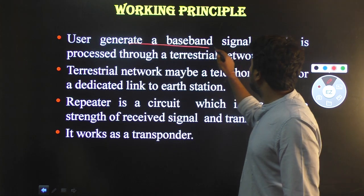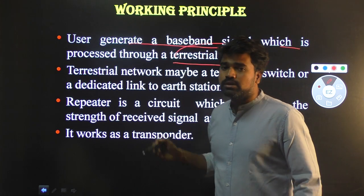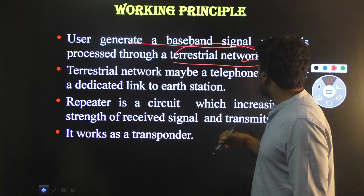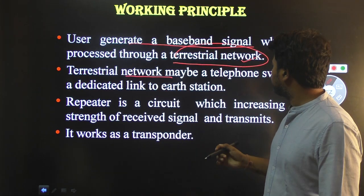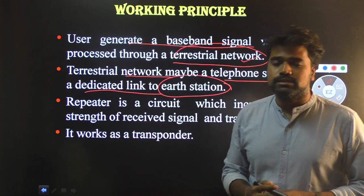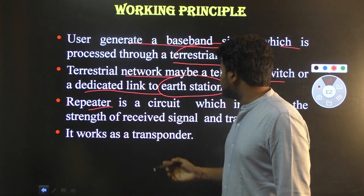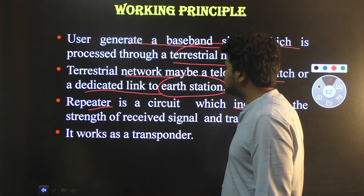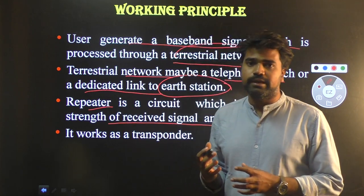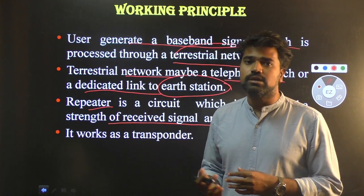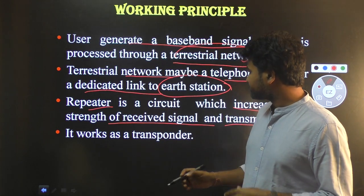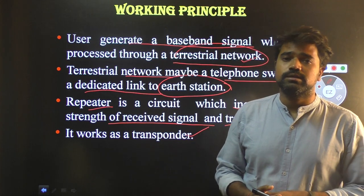The user generates a baseband signal which is processed through a terrestrial network to the earth station. The terrestrial network may be a telephone switch or any dedicated link connected to the earth station. A repeater circuit is used which increases the strength of the received signal and transmits it to the satellite. The repeater circuit plays a very important role — it receives the signal, increases its strength, and transmits it to the satellite through the uplink frequency channel. The satellite works as a transponder.